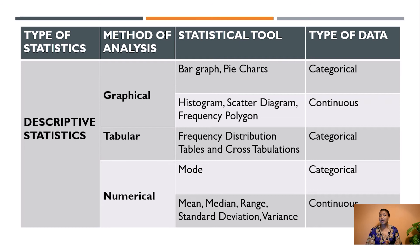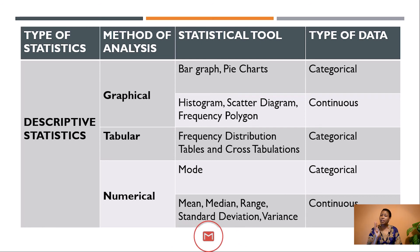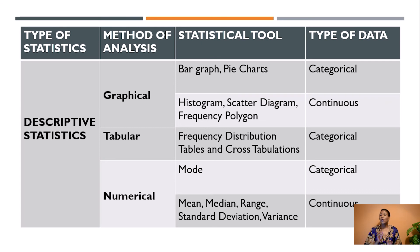This table summarizes common descriptive statistics. Under descriptive statistics, there are three methods: graphical, tabular, and numerical. For graphical: bar graphs and pie charts are for categorical data, while histograms, scatter diagrams, and frequency polygons are for continuous data. For tabular: frequency distribution tables and crosstabs are for categorical data. For numerical: mode is for categorical data, whereas mean, median, and measures of variability — range, variance, and standard deviation — are for continuous data.